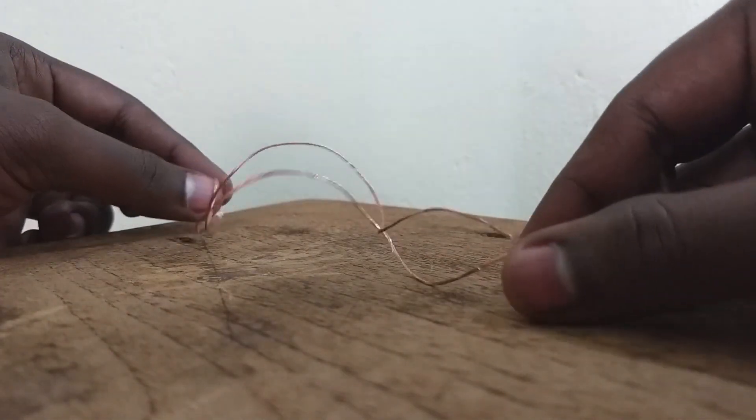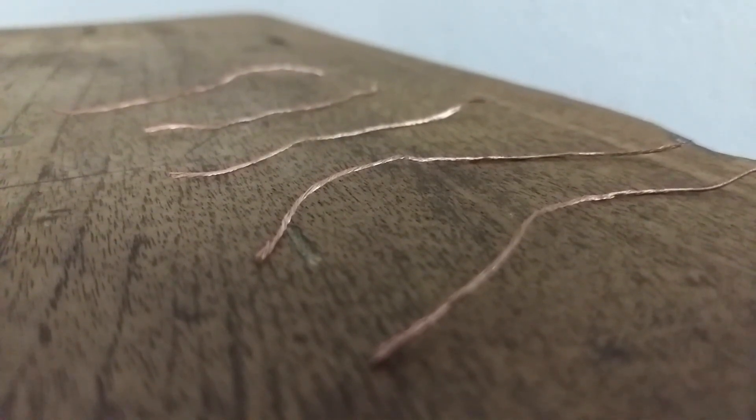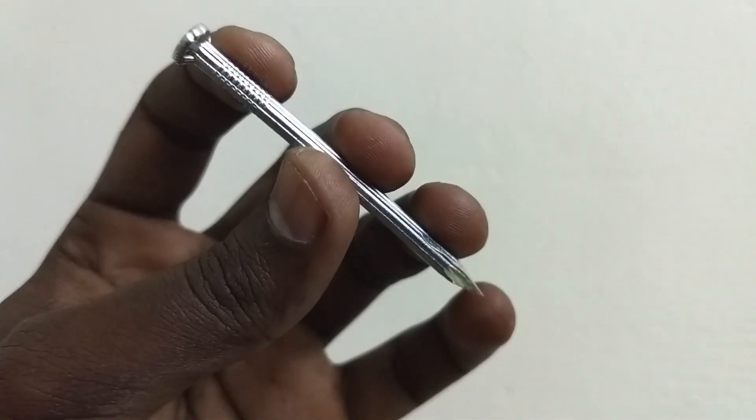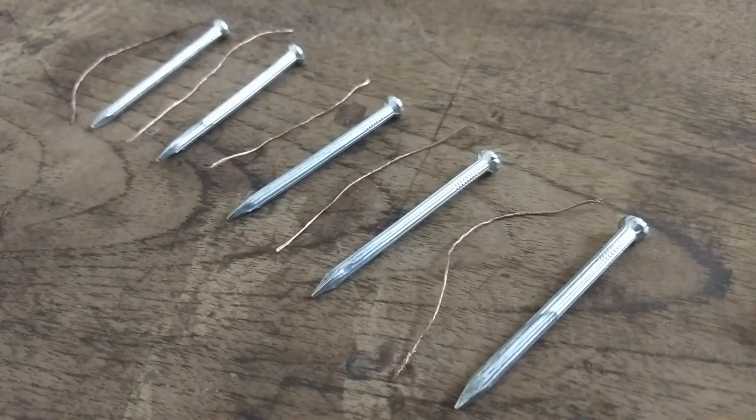Then we will cut the copper wire. We also need galvanized nails, which are zinc-coated nails.